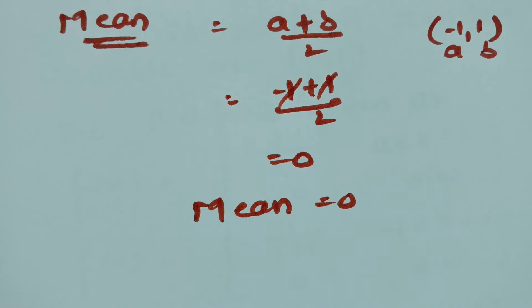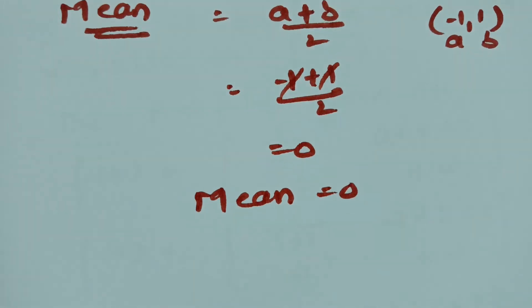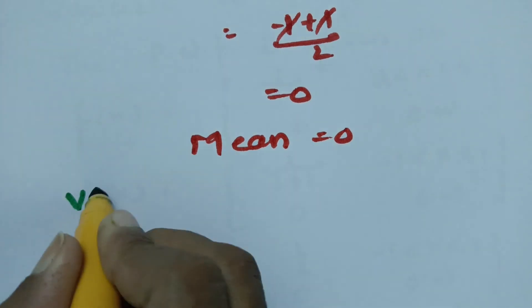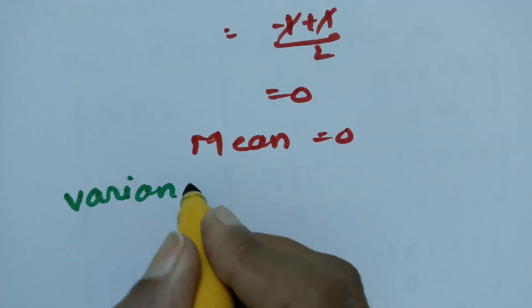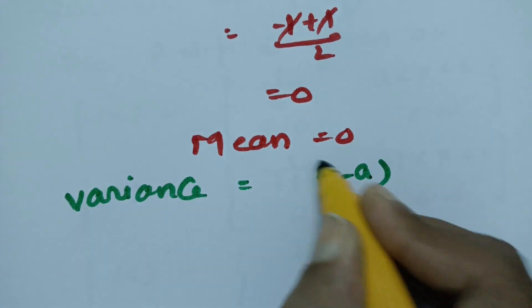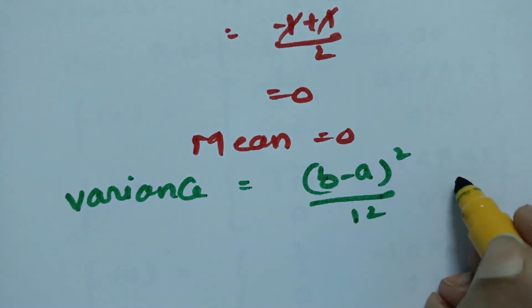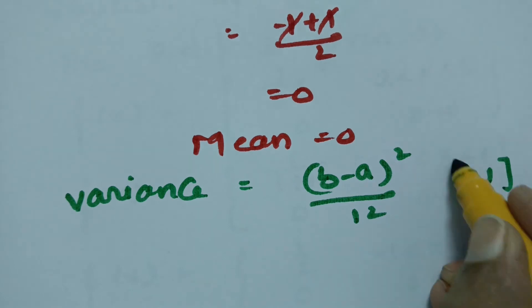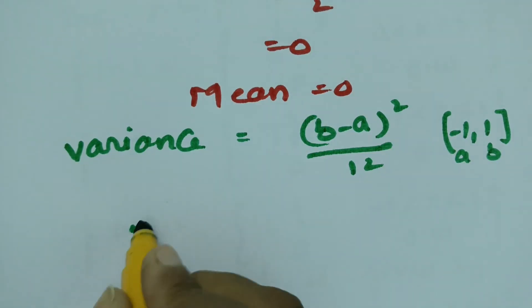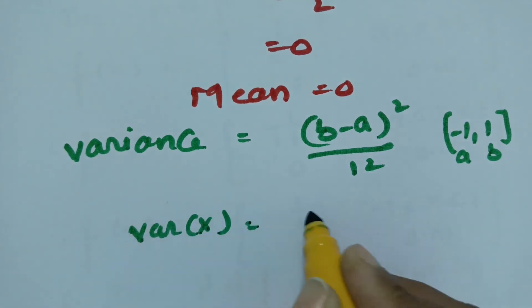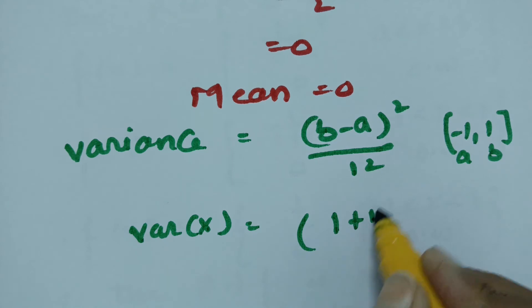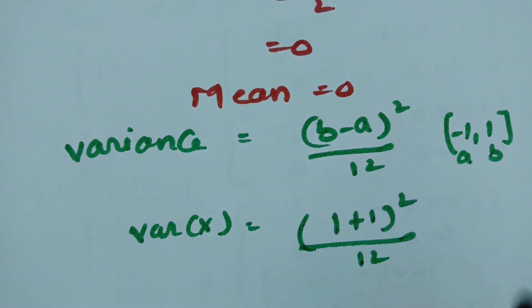The next part is variance. The variance of the uniform distribution is given by the formula b minus a whole square by 12. Here the interval is minus 1 and plus 1, so a is minus 1 and b is 1. The variance of x is b minus a, which is 1 minus of minus 1.